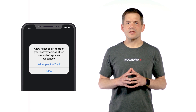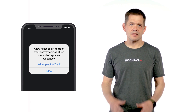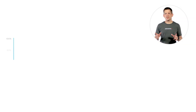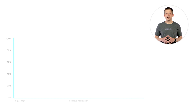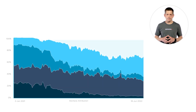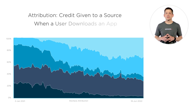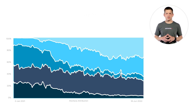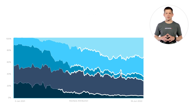Let's take a look at how these actions impacted the industry, specifically changing attribution for digital marketers. This chart shows attribution from January 2021 through January 2022. Attribution, as a reminder, is the credit given to a source, a network, or a publisher when a user downloads an app. These different bands of color represent different sources of attribution.